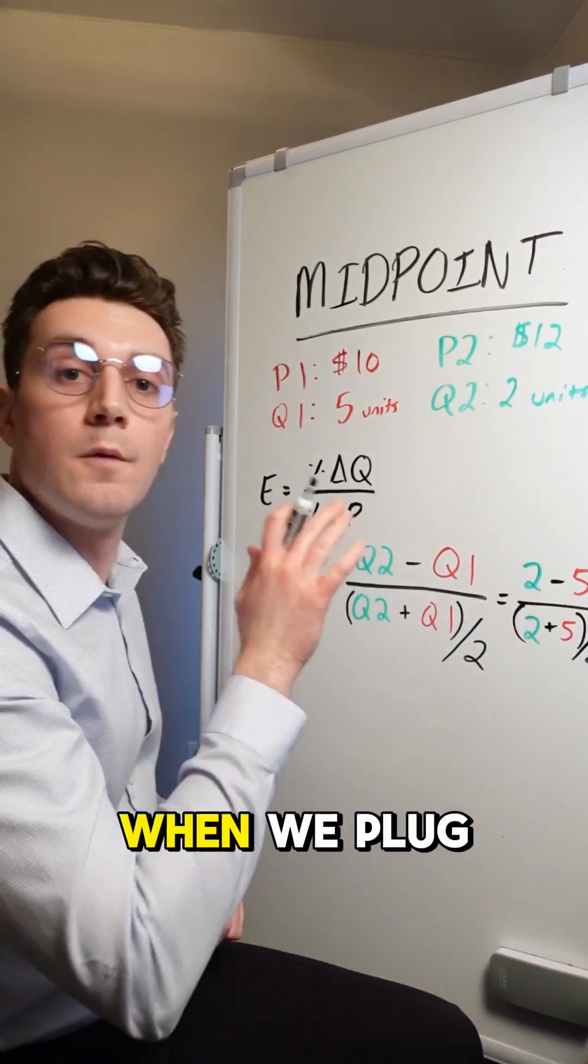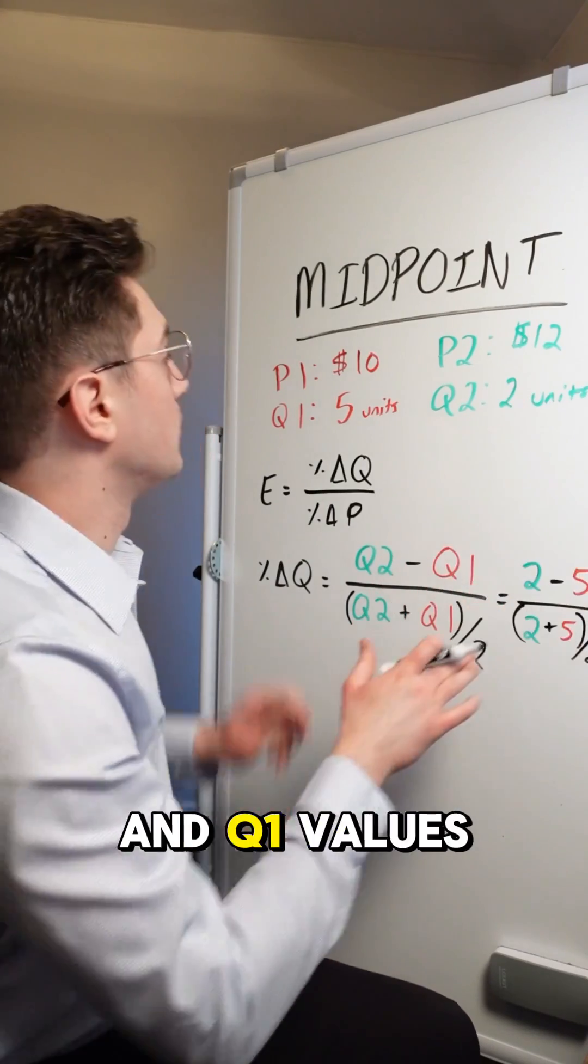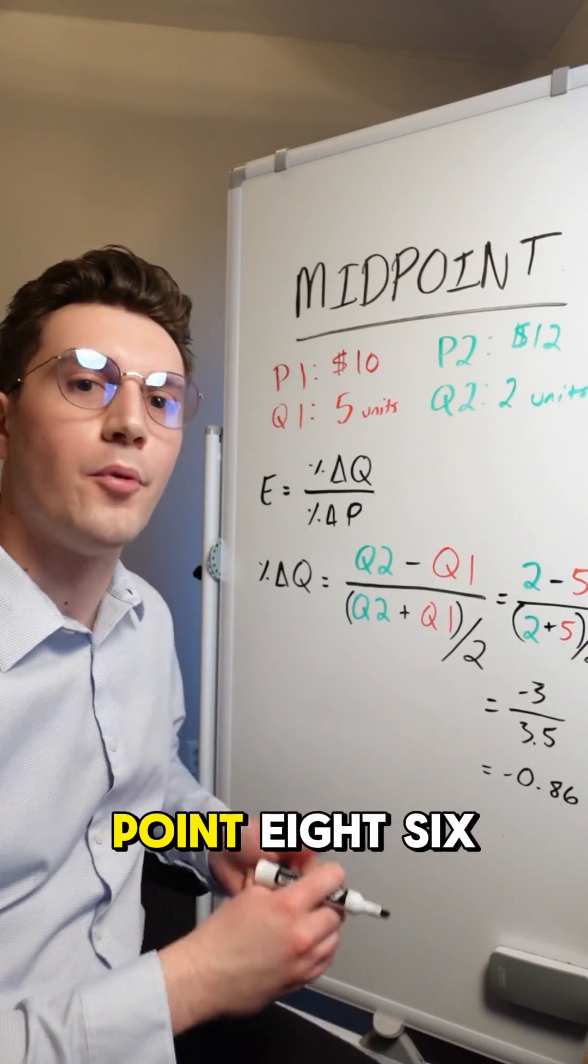And so we're calculating the average here to essentially negate changes in scale in price and quantity and thus get a more accurate elasticity calculation. When we plug in the Q2 and Q1 values up here and solve, we get negative 0.86,